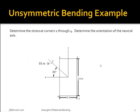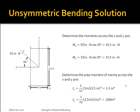I would like you to try to calculate the stress on all four corners and determine the orientation of the neutral axis due to this 55 inch-pound moment 35 degrees off the x-axis. Just like with the previous bending example, you have to determine what the moment is across the x-axis and the y-axis, as well as the area moment of inertia across the x-axis and the y-axis. For the moment across the x-axis, it would be 45.1 inch-pounds, and across the y-axis it would be 31.5 inch-pounds. For the area moment of inertia across the x-axis and across the y-axis, the respective values are used in the equation.